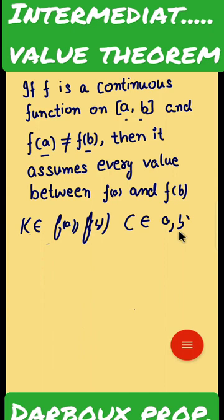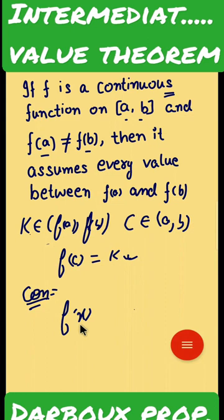and b such that f(c) = k. But its converse is not true - if any function defines this property, it is not necessary that the function is continuous. For example, f(x) equals to